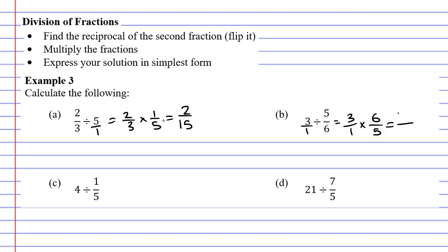Multiplying the top two, three times six is eighteen. Multiplying the bottom two, one times five gives us five. Now this is an improper fraction, so it'd be good if we can make it a mixed numeral.